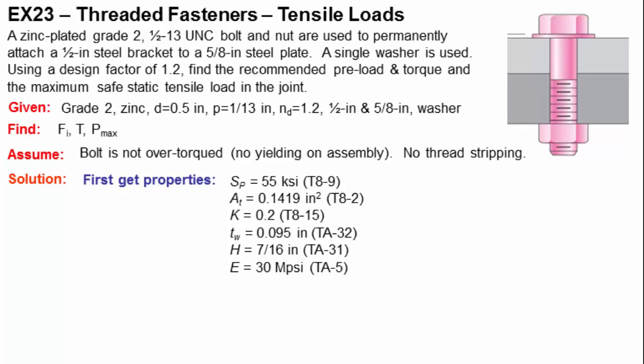We also need to find the threaded cross-section of the joint, or the effective cross-sectional area that's used in tension in the threaded portion. So that's in table 8-2, and it's labeled as AT, so it's 0.1419 square inch. Then we need to know the factor that is used to convert from tension preload into the torque that we need to apply to the joint, and that's what we call K. It comes from table 8-15, and it ends up being 0.2 for a zinc-plated bolt. We should know the thickness of the washer that's in this joint up here. So that thickness is 0.095 inches, and it comes from table A-32 in the appendix.